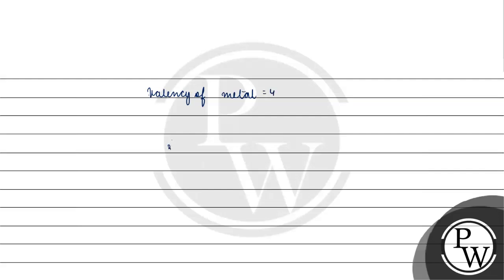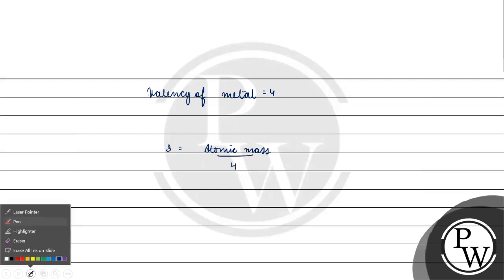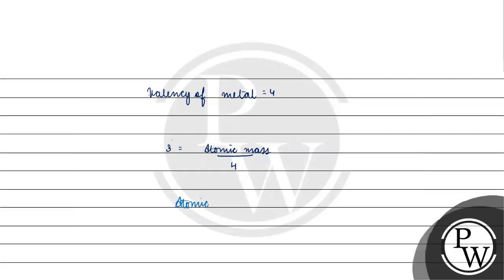Now we know that equivalent mass of metal is 3, and atomic mass equals equivalent mass times valence. We know valence is 4, so atomic mass will equal to 3 times 4, which is 12.